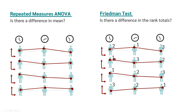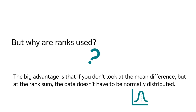This is done for all people, or all rows. Afterwards, the ranks of the single points in time are added up. At the first time point we get a sum of 7, at the second time point a sum of 8, and at the third time point a sum of 9. We can then check how much these rank sums differ from each other.